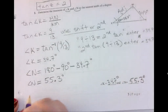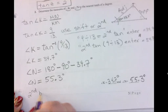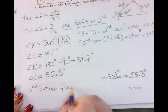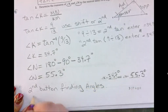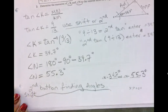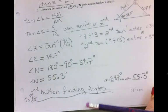So when do we use the shift or the second? The second button is when we are finding what? Angles. The second or the shift. That's when we're finding angles. So that's what we're doing right now.